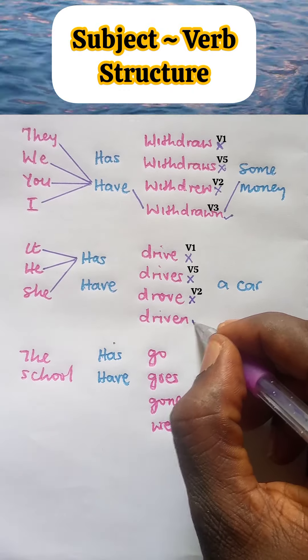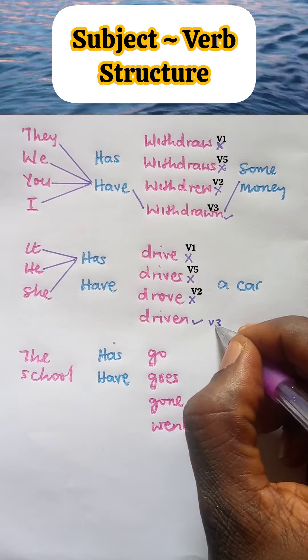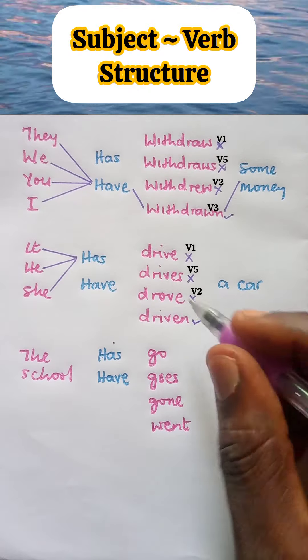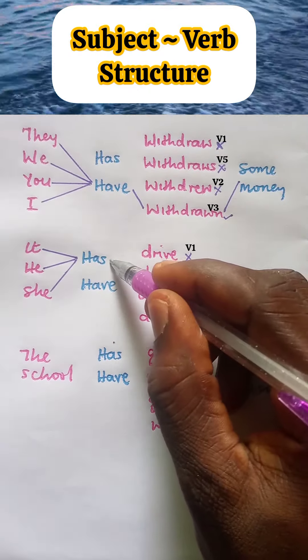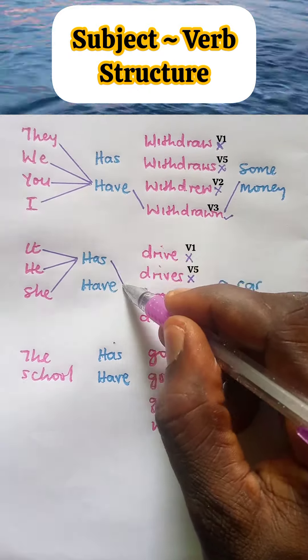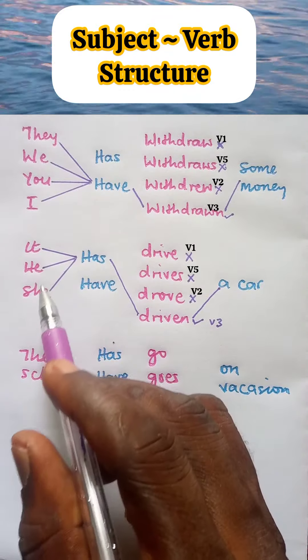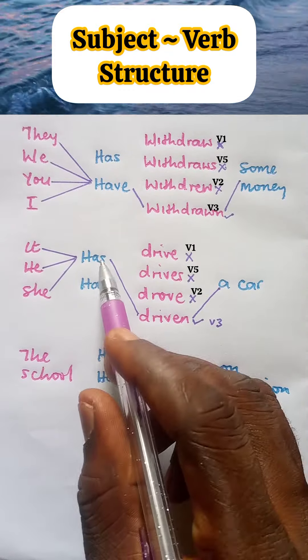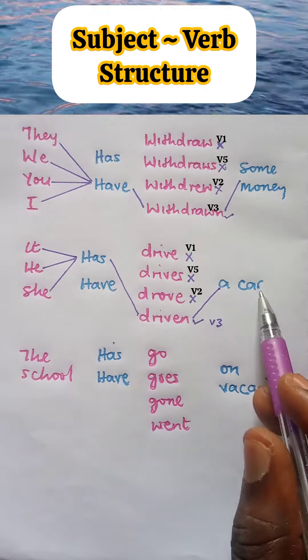Has driven? Correct — this is verb three, past participle. So that we have: has driven a car. And the sentence reads: it, he, she has driven a car.